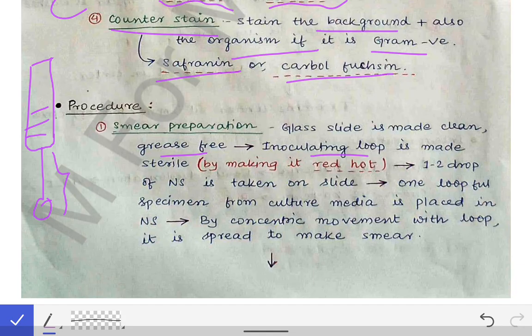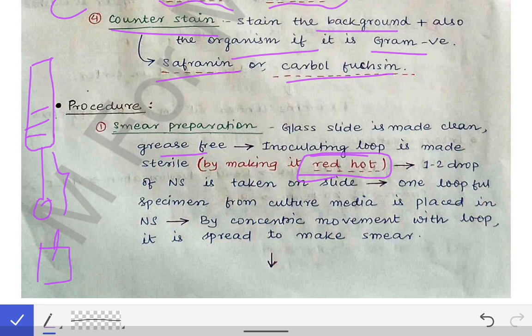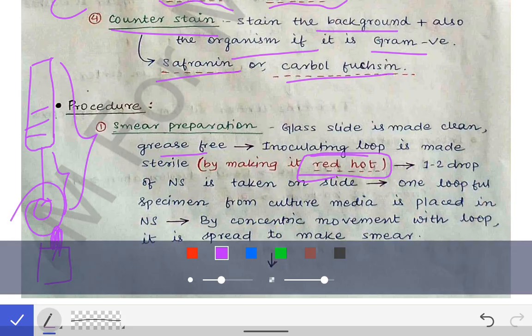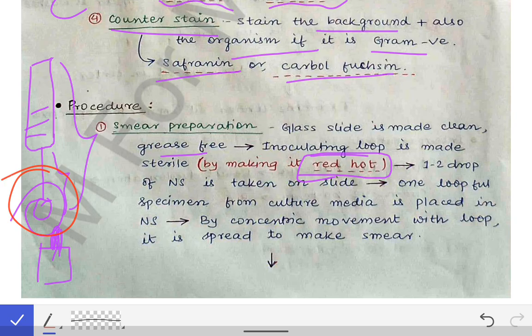We make the inoculating loop red hot — this is a method of sterilization. We keep the inoculating loop vertically at 90 degrees over the flame of the lamp until it becomes red. As it becomes red, that is called the red hot technique of sterilization of the inoculating loop.